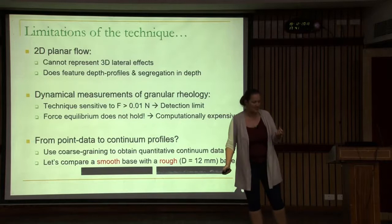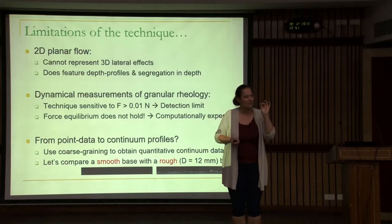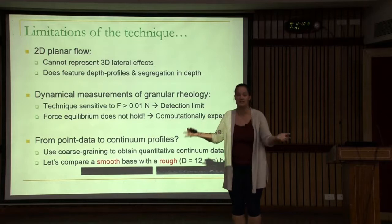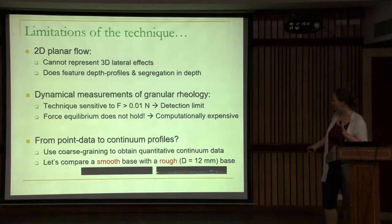Another complication: if you have a static system — like the work Bob Behringer's group did a lot, working on shearing and slow motion of grains — you have static equilibrium. The extra difficult thing about avalanches is that it's not in equilibrium, and therefore it's very computationally expensive. We had to develop some tools for that.